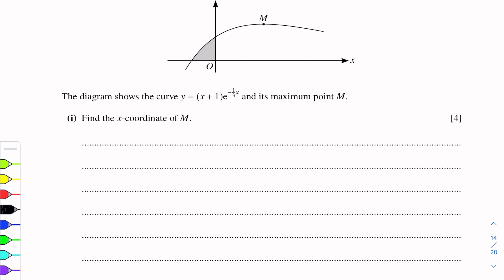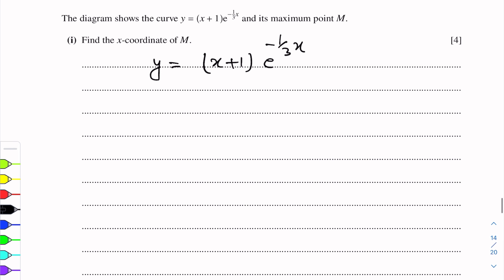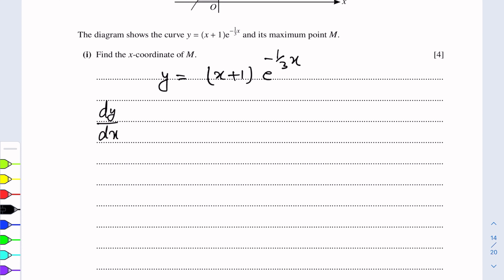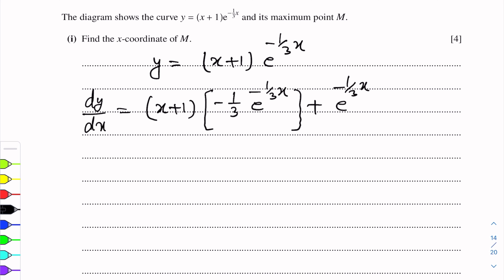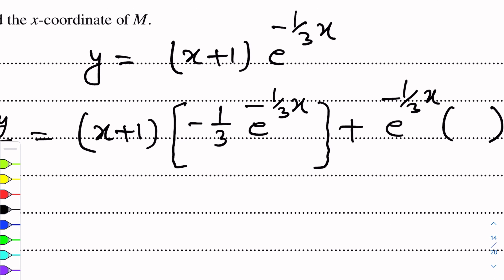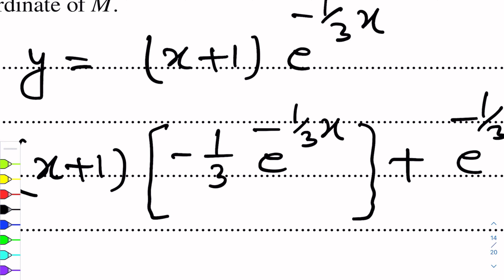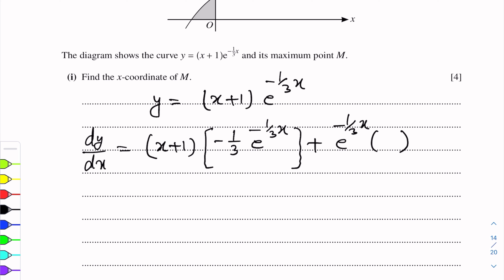The equation of the curve is y = (x+1)·e^(-1/3 x). So dy/dx will be (x+1) as such into differentiation of e^(-1/3 x), which gives (-1/3)·e^(-1/3 x), plus e^(-1/3 x) as such into differentiation of (x+1), which is 1. We will multiply by 1 here.